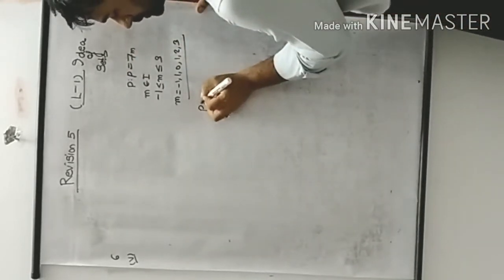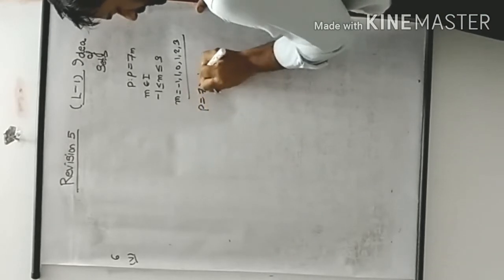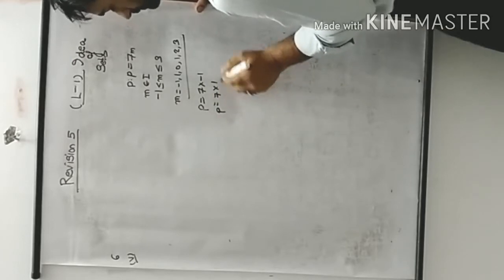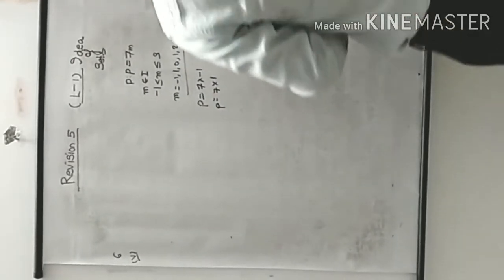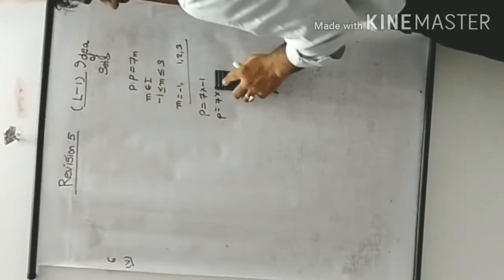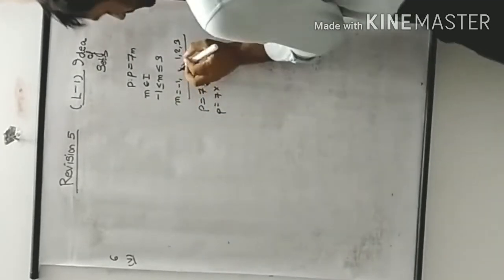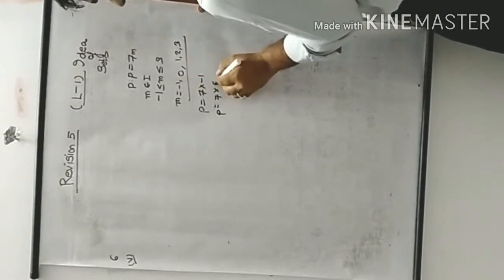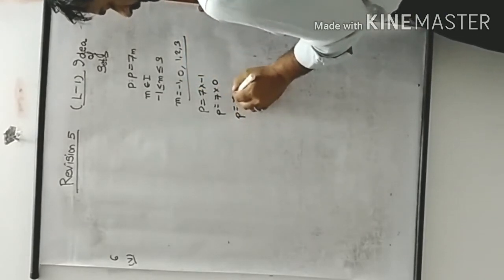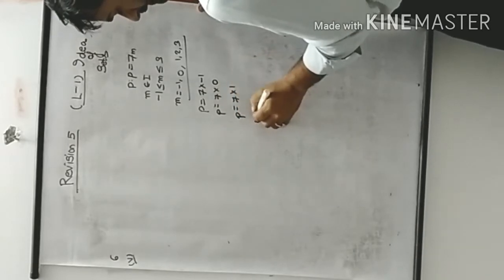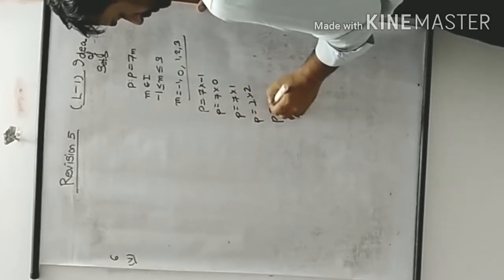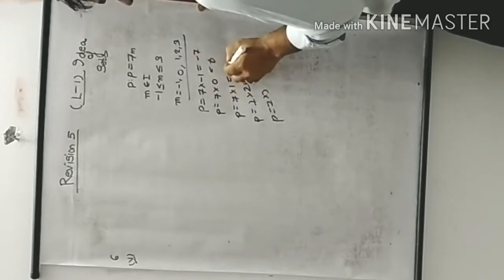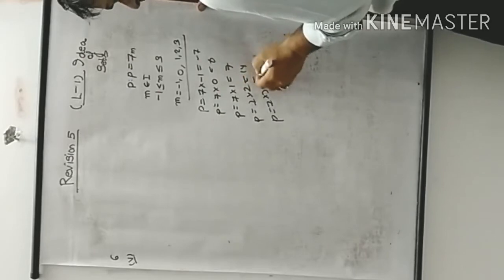The first value: p = 7×(-1) = -7. Then p = 7×0 = 0. Then p = 7×1 = 7. Then p = 7×2 = 14. Then p = 7×3 = 21. These are the values.